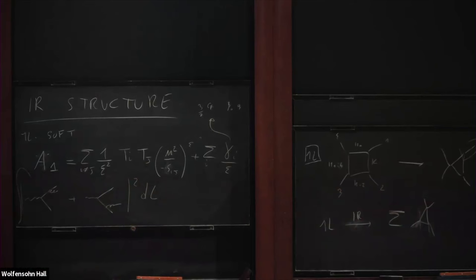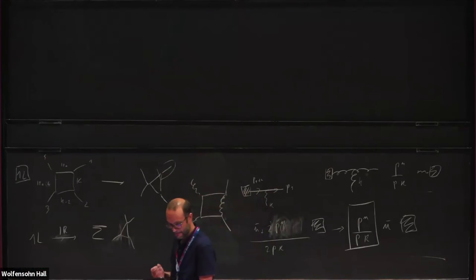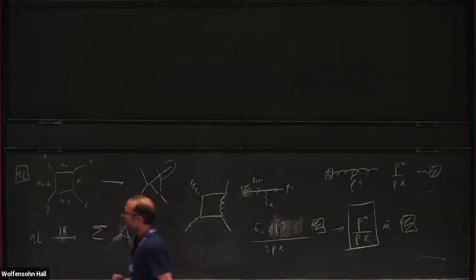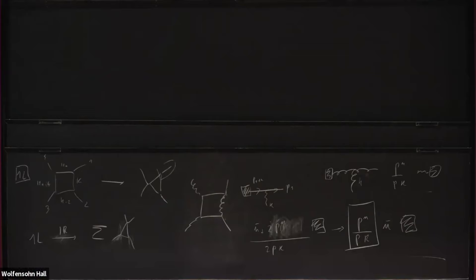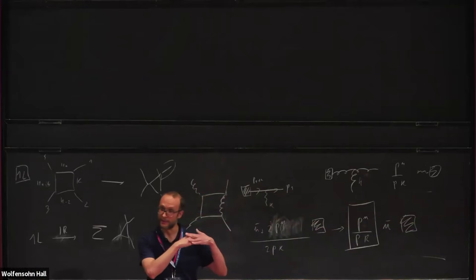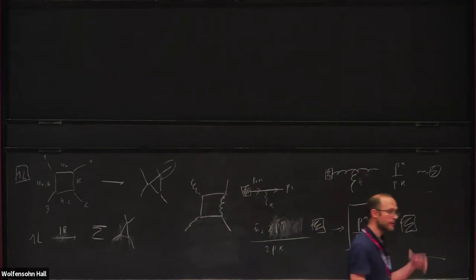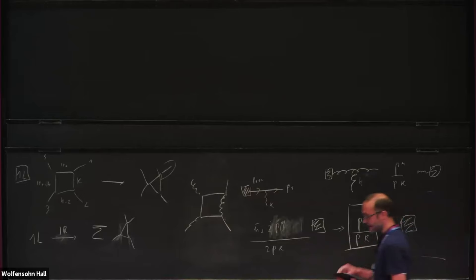What's interesting is what happens beyond one loop. There is a cute way of finding infrared singularities of generic multi-loop amplitudes that makes them more transparent: seeing infrared singularities of scattering amplitudes as UV singularities of an effective theory. I will try to describe this in a quick way. I don't have time to go into a lot of details, but I hope to at least give you an idea.